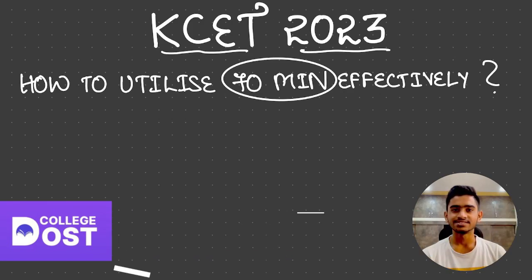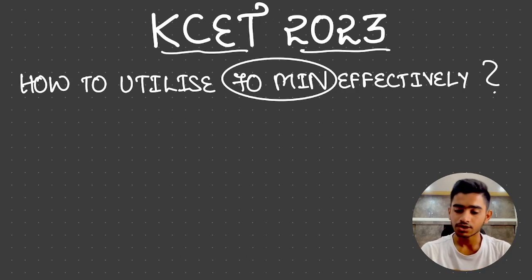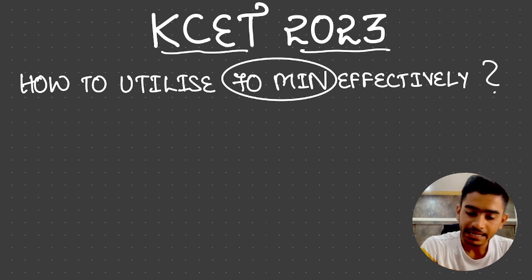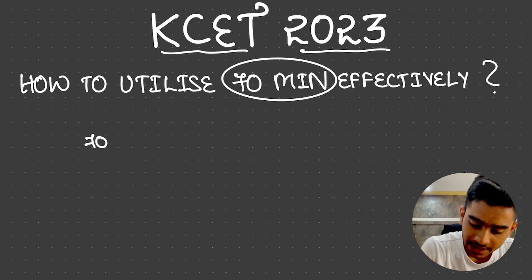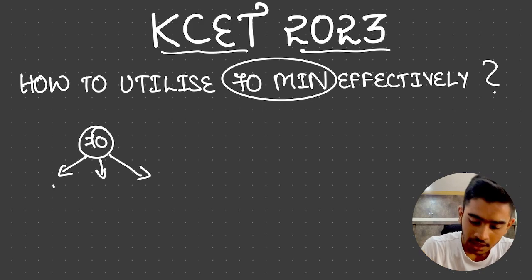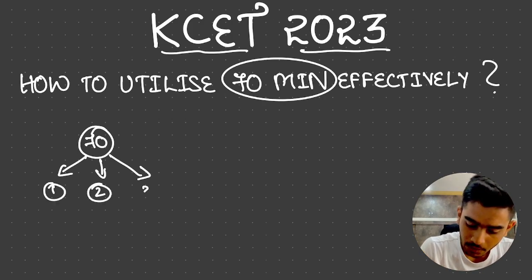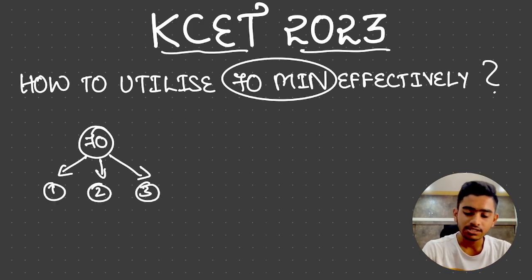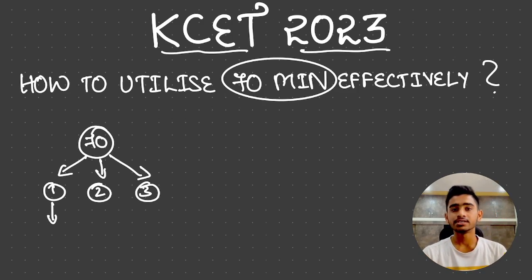With that, let's start. The first thing you have to do is divide your 70 minutes into three slots. The 70 minutes must be divided into three slots — there's no particular fixed timing for each; it depends on each individual. In the first slot, all you have to do is go through the question paper correctly, one by one, once you receive it.